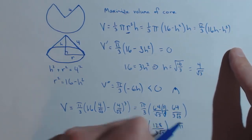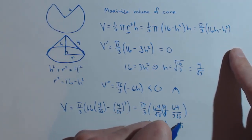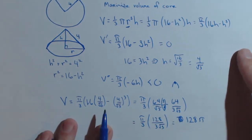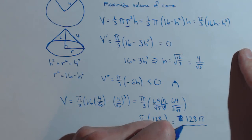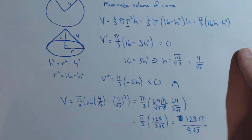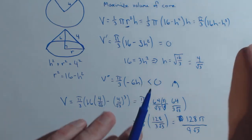We're simplifying it a little bit. We get 128 pi over 9 rad 3. And this is going to be in whatever our units are cubed.